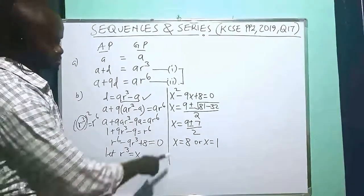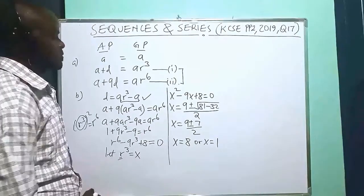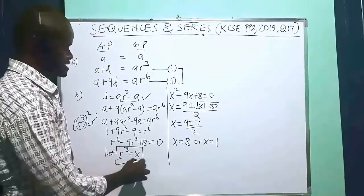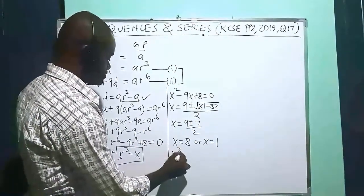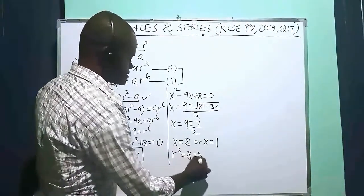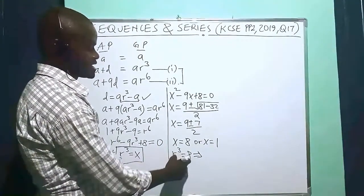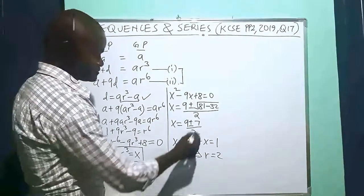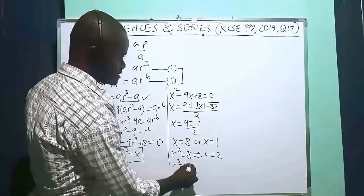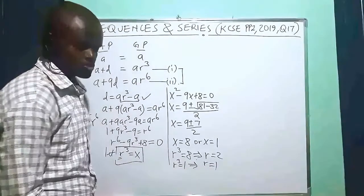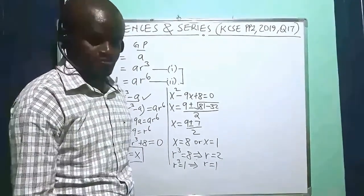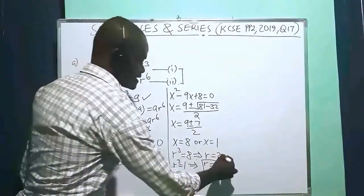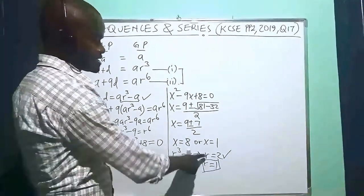We are interested in the value of R, not x. Recalling that R³ equals x, we have R³ equals 8, which implies R equals the cube root of 8, giving R equals 2. We also have R³ equals 1, which implies R equals 1. However, when R is 1 we may not get the desired result for a geometric progression, so the common ratio we are interested in is R equals 2.